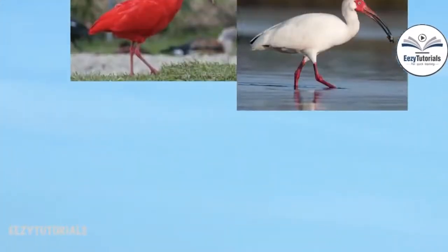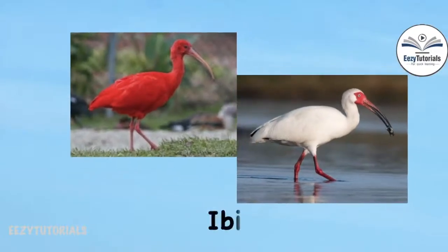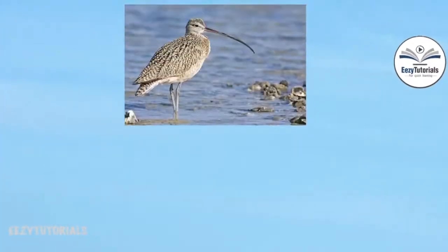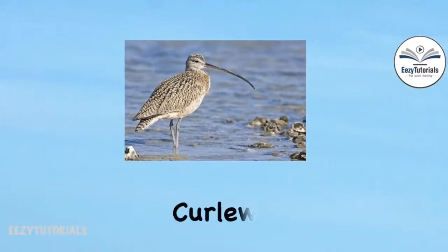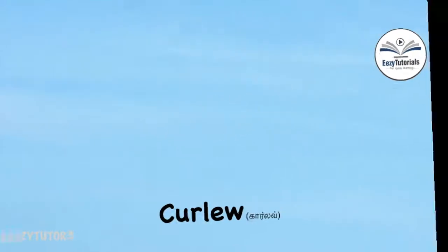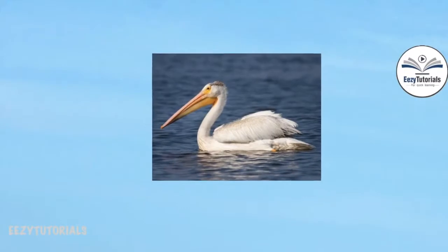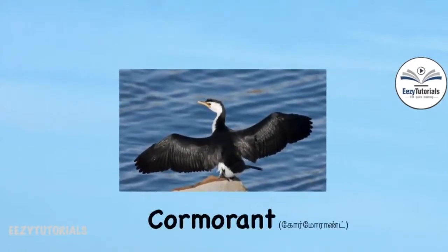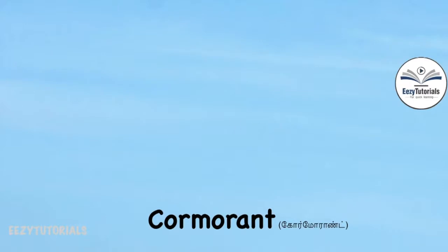This bird can separate milk and water — Swan. Find this water bird — Ibis. This is a curly bird with a long beak — and this water bird is Pelican. Long and broad beak — and this black color water bird is Cormorant.